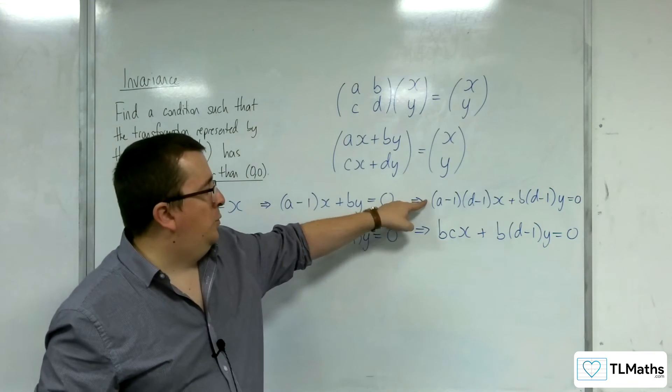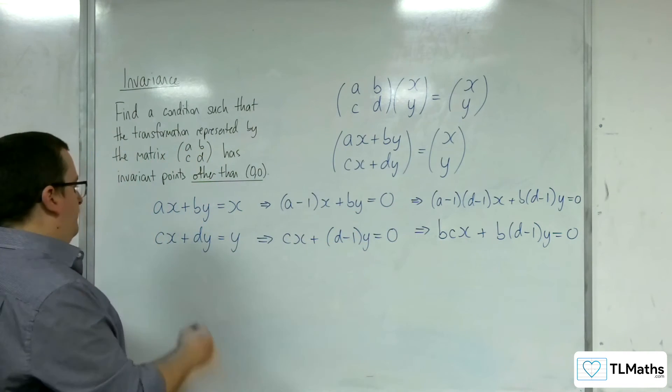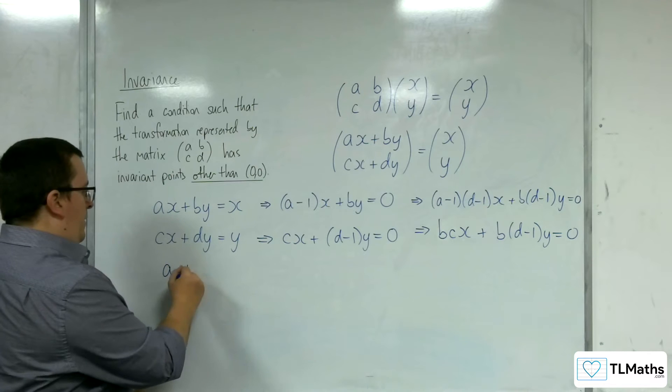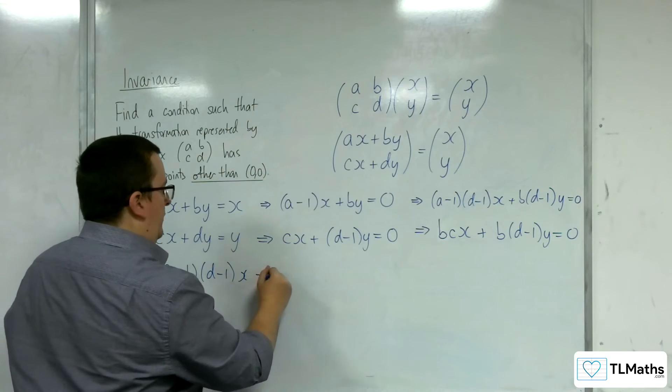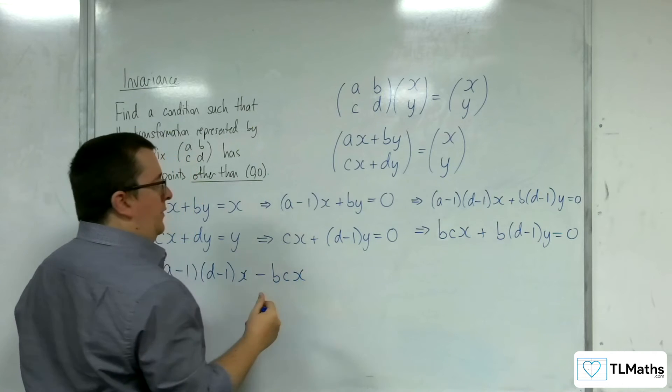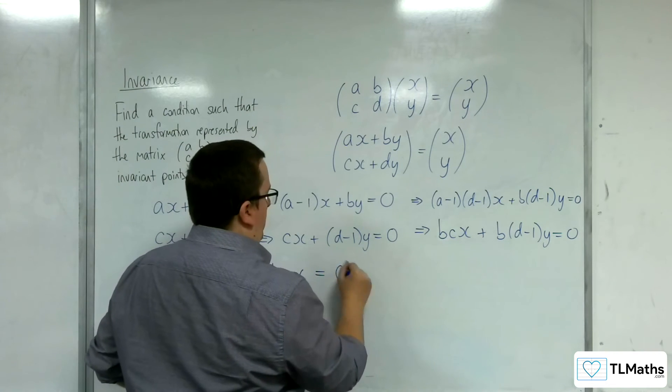If I do this equation subtract that equation, I would have (a-1)(d-1)x take away bcx is equal to 0.